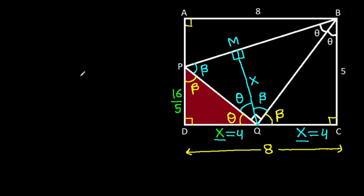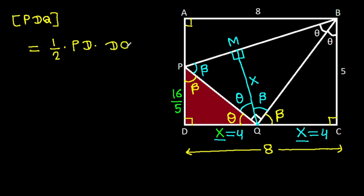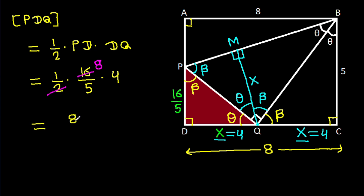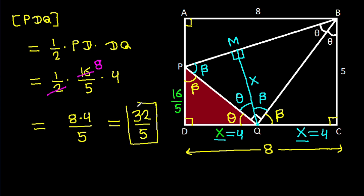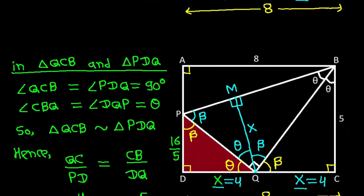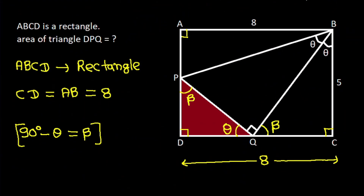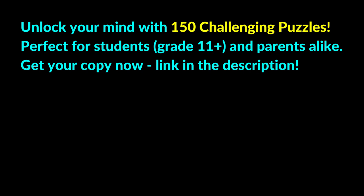Now, area of triangle PDQ equals one half times base PD times height DQ, which is one half times 16 over 5 times 4. That gives 8 times 4 over 5, which equals 32 over 5.